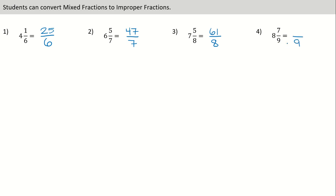Last example here. The same denominator. And then we're going to multiply 9 times 8. That's 72. Plus 7. Gives us 79.